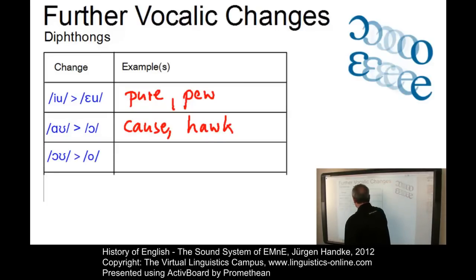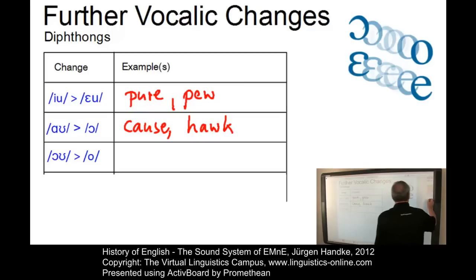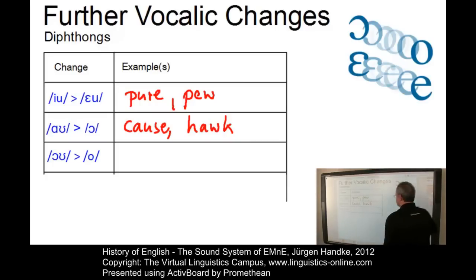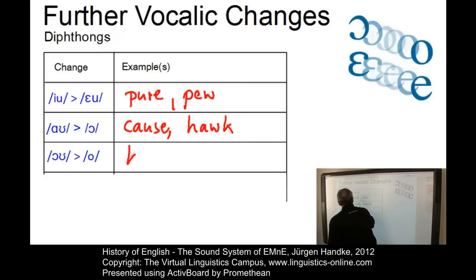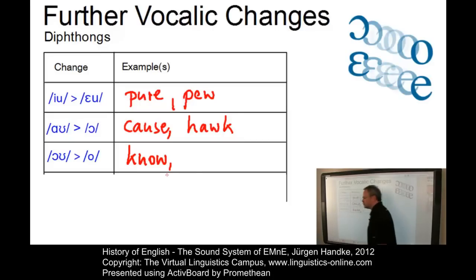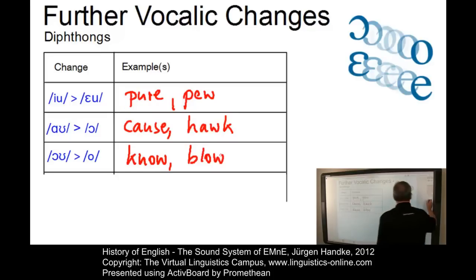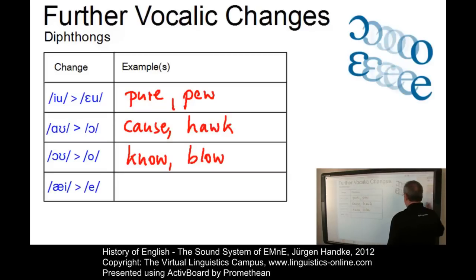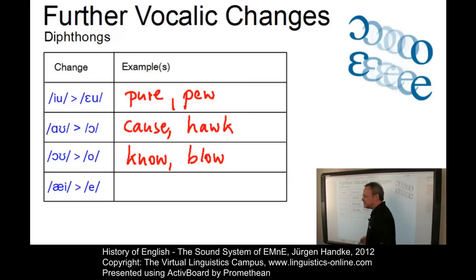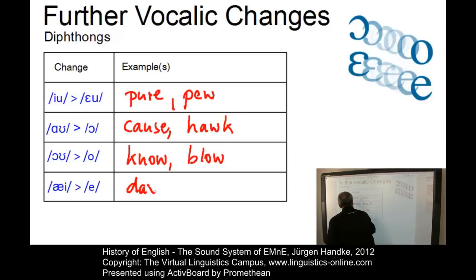The next diphthong change is another monophthongization process, where the diphthong /eu/, as in 'no', was monophthongized to /oː/, and 'blow' became 'blow'. Last but not least, there is the change of /ai/ to /eː/, again a monophthongization, which affected words such as 'die', which became 'dee', or 'raise', which became 'raise'.